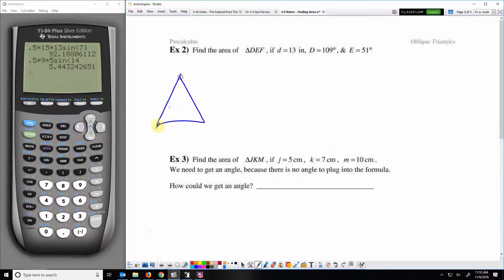Here's triangle DEF. D is 13 inches, angle D is 109 degrees, and angle E is 51 degrees. This time we don't have side-angle-side. If we wanted side-angle-side, we would need to know how long is side F.